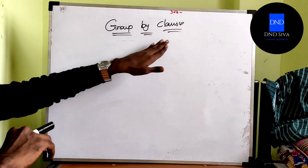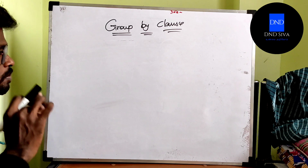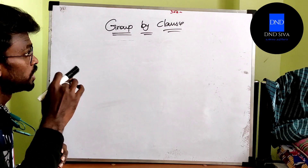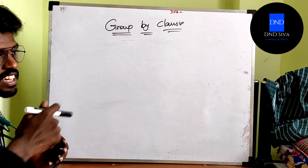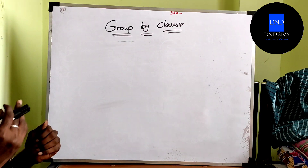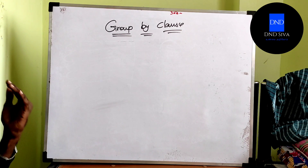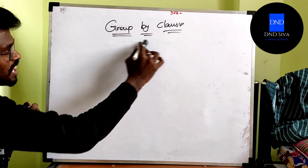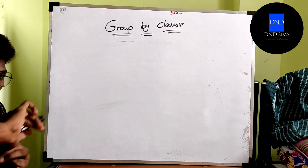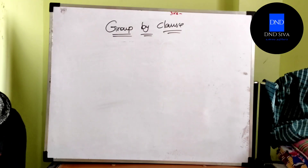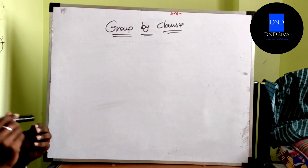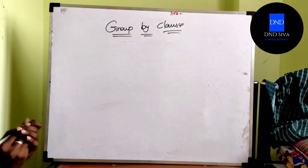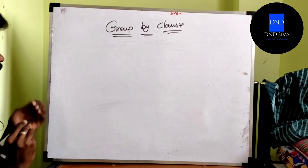Okay friends, what is group by class? What is meant by group by class? Group by class is used to group records. We are using records for group by class. Why do we group? Let's go to this video.